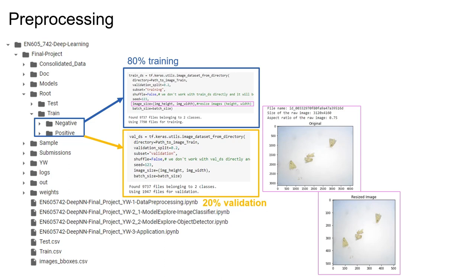The original raw image dataset may contain images with random sizes. All images are resized to 512 by 512 pixels for training. We used 80 percent of the images for training and 20 percent for validation. In this slide we can see our directory structure for the training and testing image dataset.